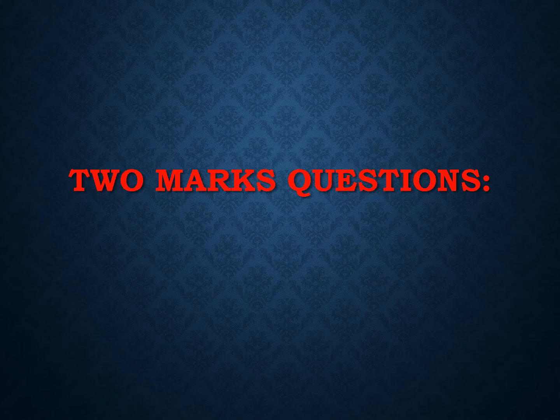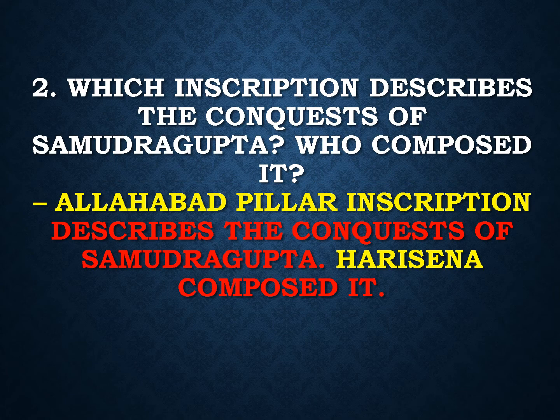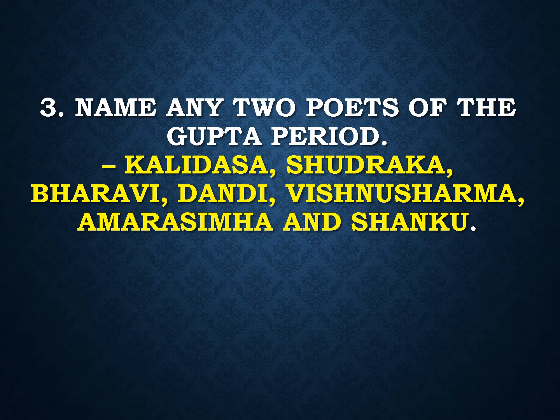Two marks questions. Which were the two capitals of the Guptas? Answer: Pataliputra and Ujjain. Which inscription describes the conquest of Samudra Gupta? Who composed it? Answer: The Allahabad pillar inscription describes the conquest of Samudra Gupta. Harisena composed it. Name any two poets of the Gupta period.